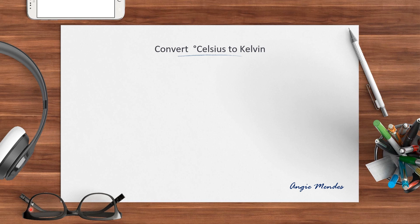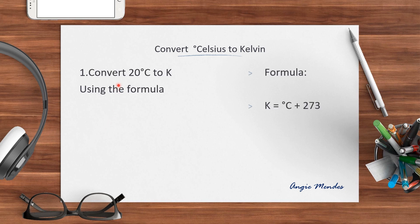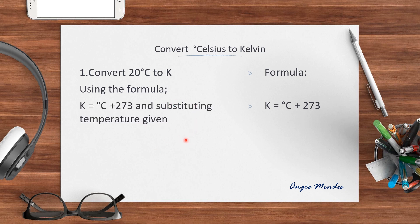Let's begin by taking an example. If we are to convert 20 degrees Celsius to Kelvin, we will use the formula: Kelvin is equal to degree Celsius plus 273. Now using this formula and substituting the value of degrees Celsius given, we will proceed with the calculations. So we will get Kelvin is equal to 20 plus 273, which gives us 293 Kelvin.